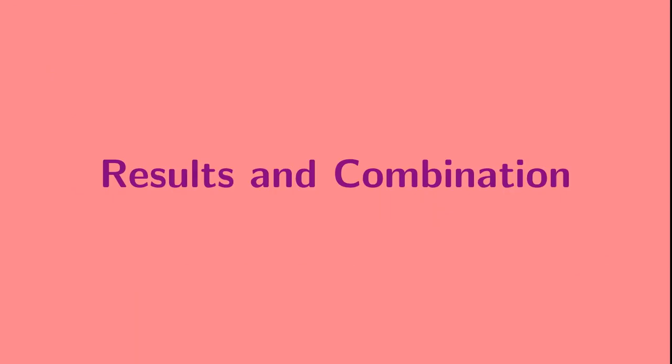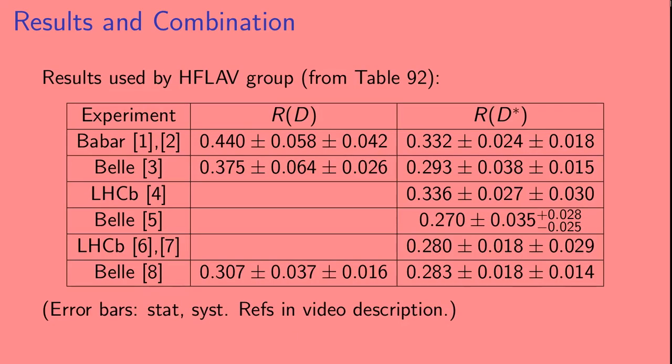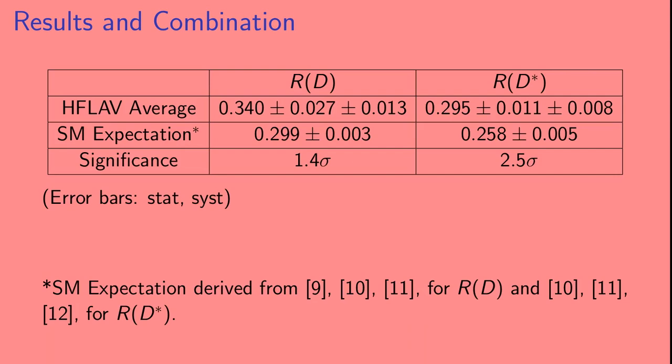Now we can take a look at the results and combination. Here are the results from Babar, Belle, and LHCb that are used by the heavy flavor averaging group. These numbers are just taken from table 92 in the heavy flavor averaging groups paper. The heavy flavor averaging group gets an average of those values for both R(D) and R(D*). And those values are shown here. They then compare them to the standard model expectation and get a significance. They find that R(D) is 1.4 sigma above the standard model expectation and R(D*) is 2.5 sigma above the standard model expectation.